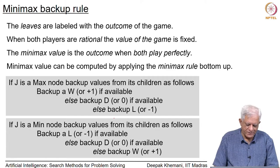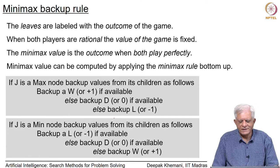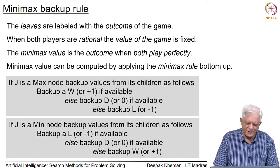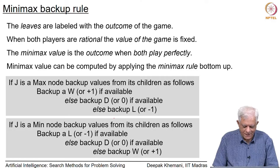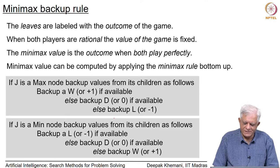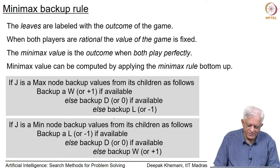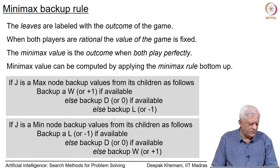Likewise for Min: if the node is a Min node, back up L if possible — remember L is a loss for Max and a win for Min — and that corresponds to -1. That is why the Min player is called Min, because it chooses the minimum value, which is -1. If Min cannot get -1, it will also settle for a draw (0), just like Max. The third choice for both is to lose. At each layer we do this backup of values and once done we get the minimax value of the game tree.